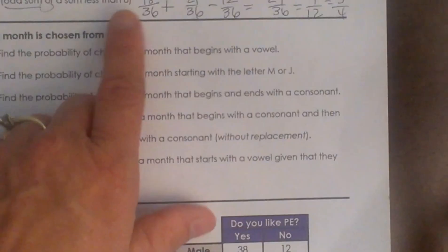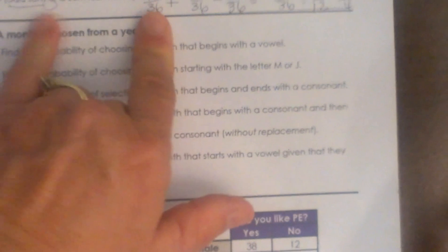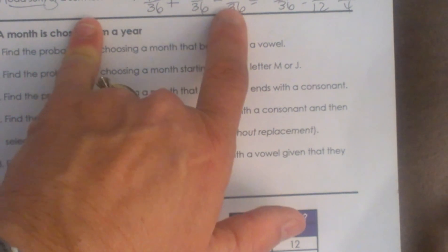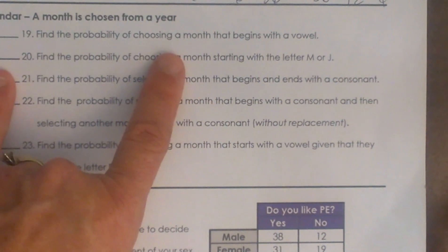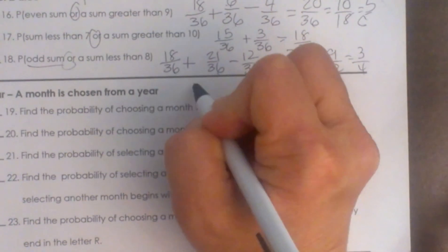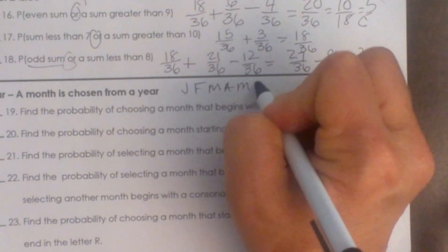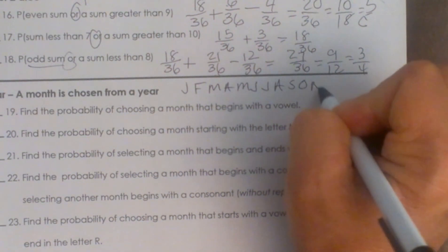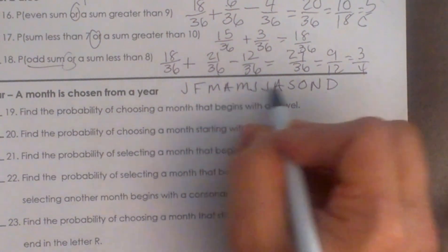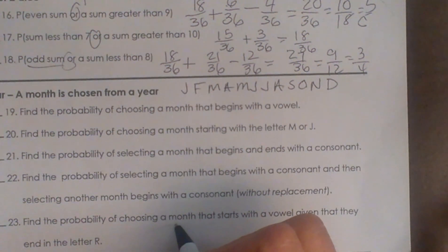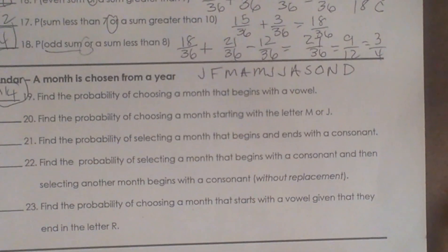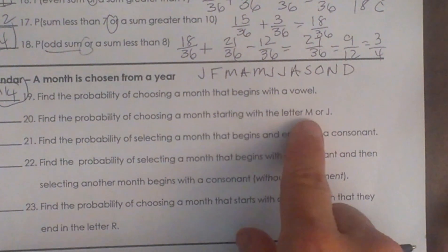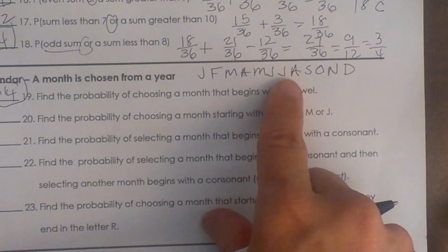So you've got 18 that are odd sums, 21 that are a sum less than 8, but 12 got counted twice — so you eliminate those. A calendar: a month is chosen from a year. Find the probability of choosing a month that begins with a vowel — January, February, March, April, May, June, July, August, September, October, November, December. Three of those begin with a vowel, giving us 3 twelfths or 1 fourth. Probability of choosing a month starting with M or J: 1, 2, 3, 4, 5 — five twelfths.